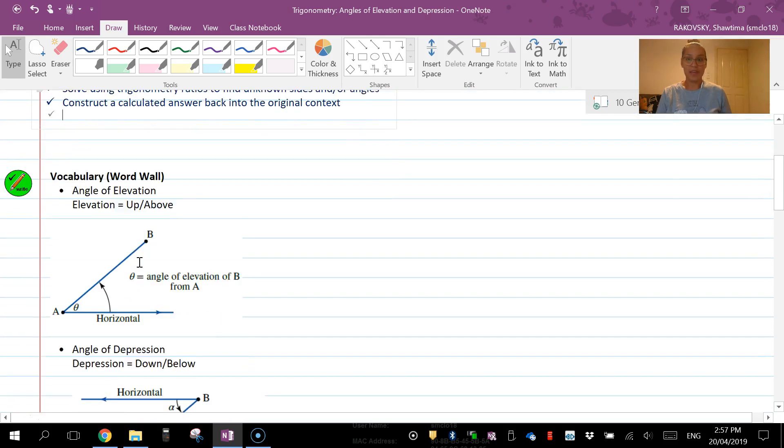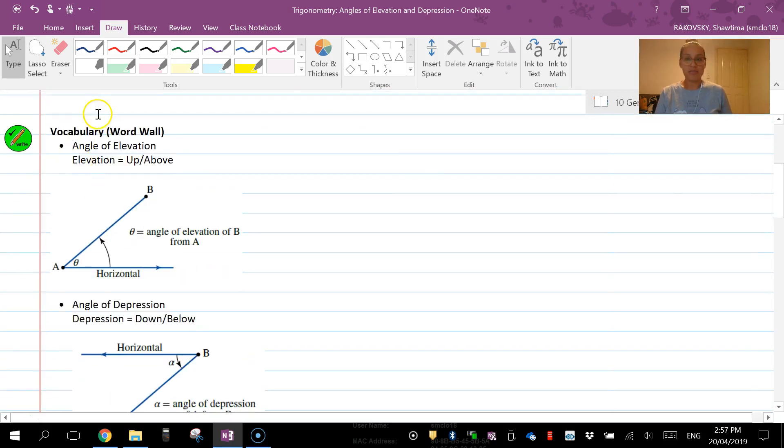So to get started, angles of elevation are angles that go from the horizon and above it. So you always have a straight horizontal line in the question and then an angle of elevation is moving above that horizon or horizontal.